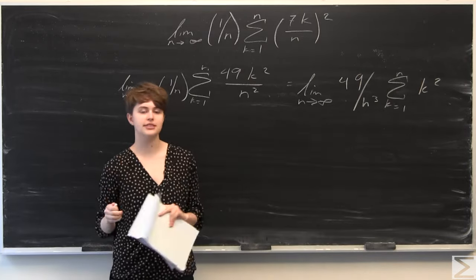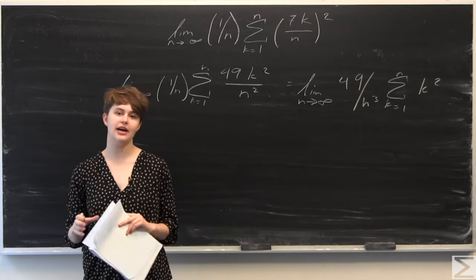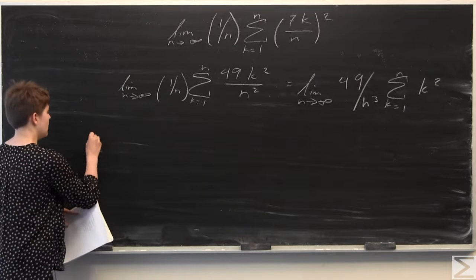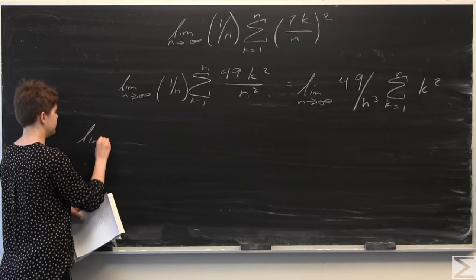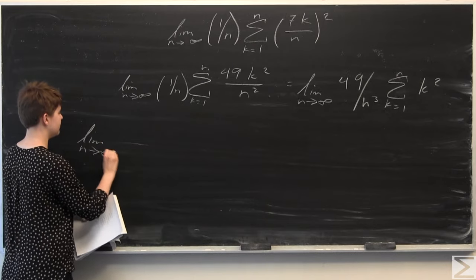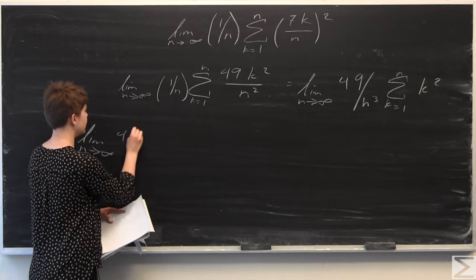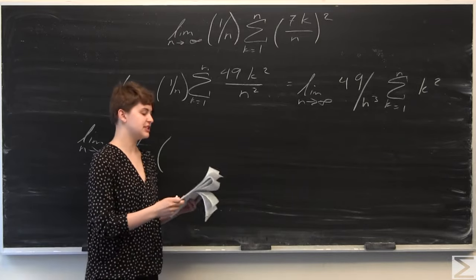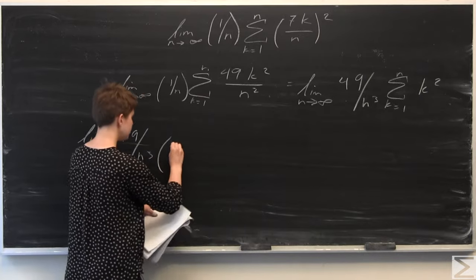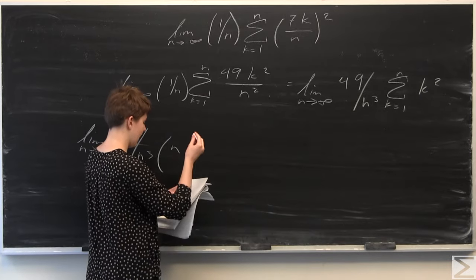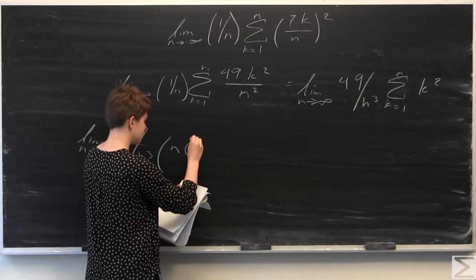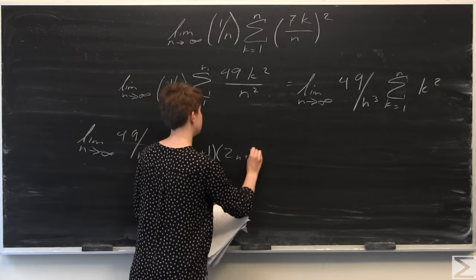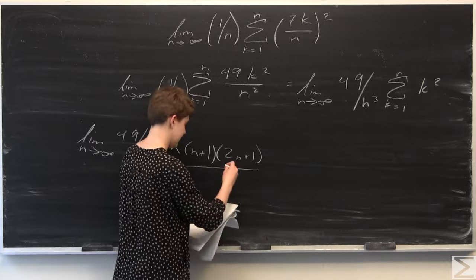So now we know that we have the summation from k equals 1 to n of k squared, which can be simplified using the following. So we have the limit as n goes to infinity of 49 over n cubed, and this summation simplifies down to n times n plus 1 times 2n plus 1, all over 6.